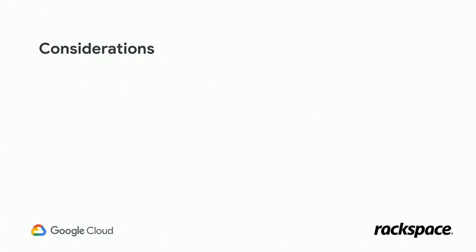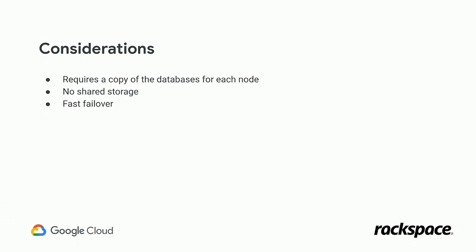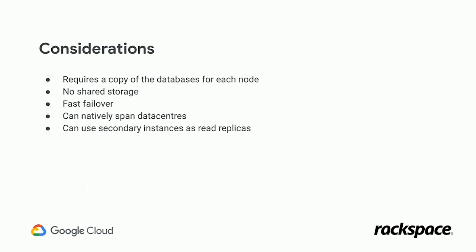The considerations for Always On generally: each node has to have a copy of the databases on it, so your storage requirements might be increased. However, there's no requirement for shared storage, so you can actually use cheaper storage. The failover is relatively fast and predictable, and you can natively span data centers with this — the underlying technology is essentially SQL mirroring, so your SQL instances can actually be anywhere: on-prem, in another cloud provider, or in another GCP region. And finally, those secondary instances can get some use as read replicas.